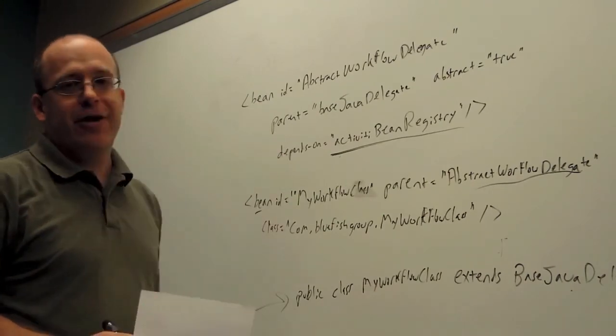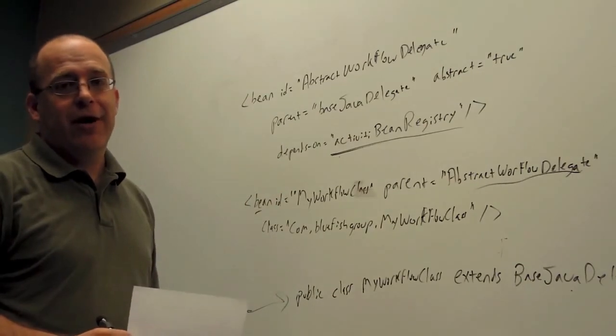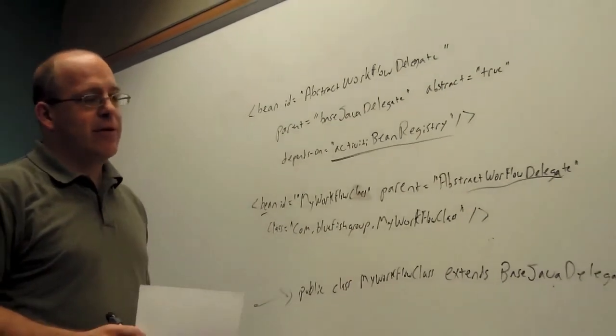Now, if you have one bean that you're going to instantiate, this is kind of irrelevant. But if you have four or five, like we did in our code, then it may save this little bit of configuration code.